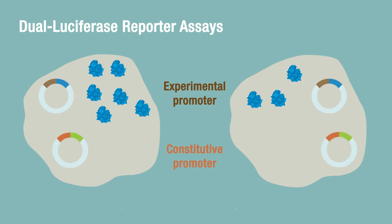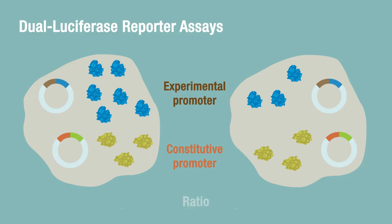For a dual luciferase assay, transfect with a control plasmid constitutively expressing a second luciferase. The ratio of experimental luciferase activity to control luciferase activity corrects for variables in your reporter assay.